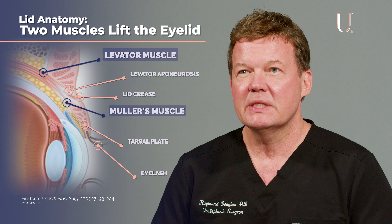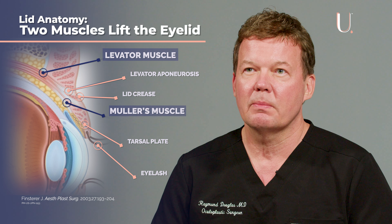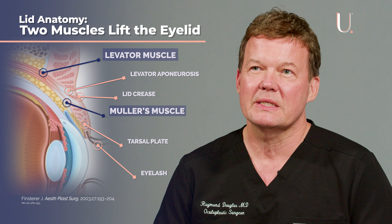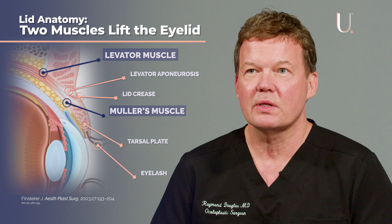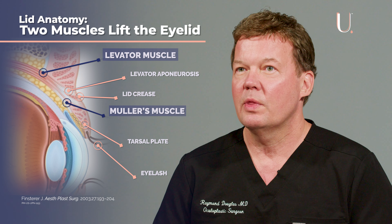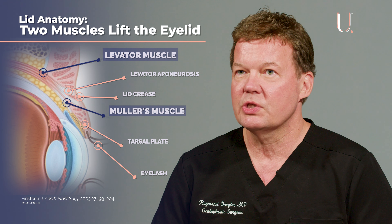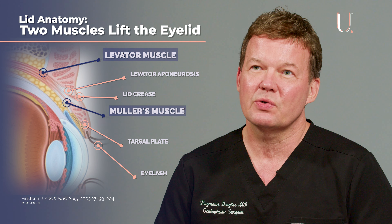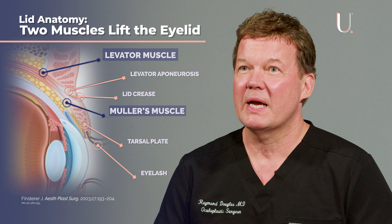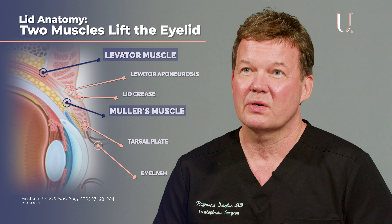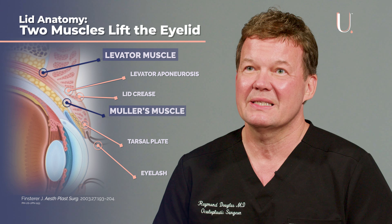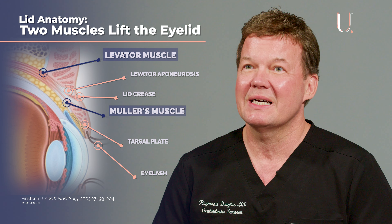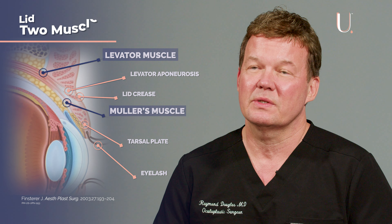As you can see in this image, the levator muscle fibers go into the skin and that's how the lid crease forms. When the muscle stretches and pulls back, the lid crease gets higher because the fibers are higher up into the skin. So a higher lid crease is a sign of ptosis.